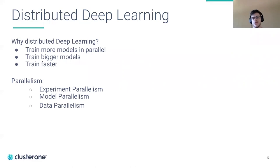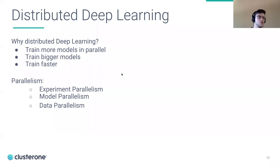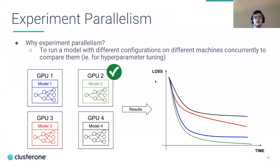Usually you want to train several models in parallel — that's called experiment parallelism. You run several experiments at the same time, look at their outputs live, pick the best model candidates, and speed up your research. You can also want to train bigger models that don't fit on one GPU, in which case you'd use model parallelism. Or you can want to train your existing models faster on a very large dataset that would take days, which requires a strategy to distribute using data parallelism.